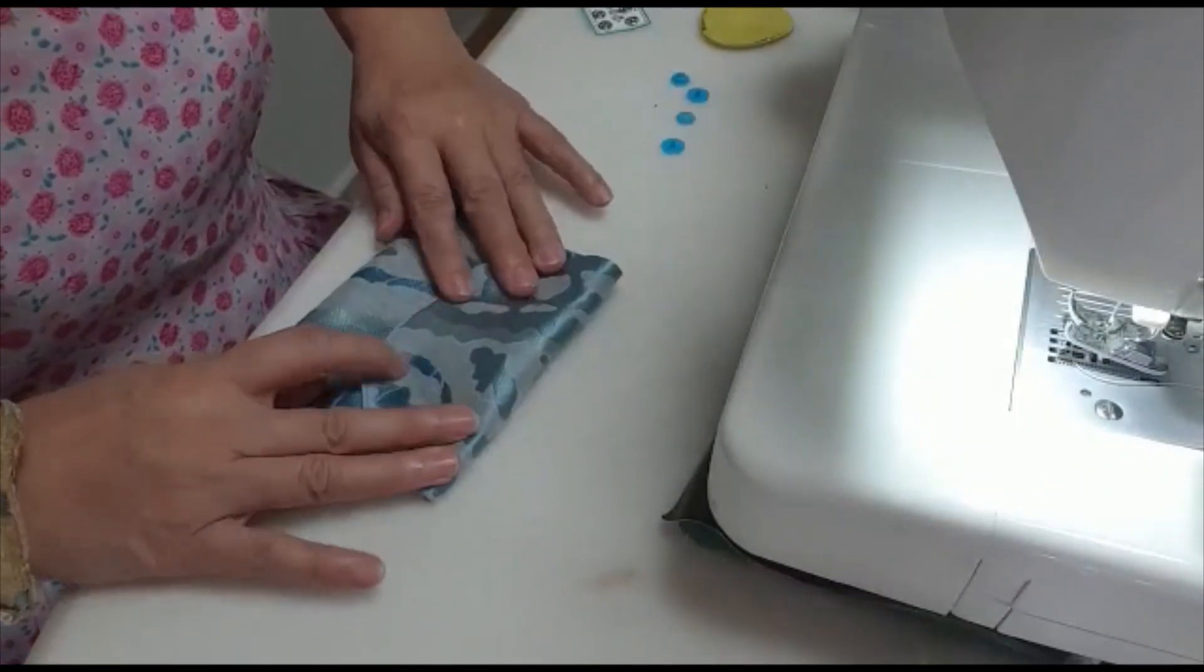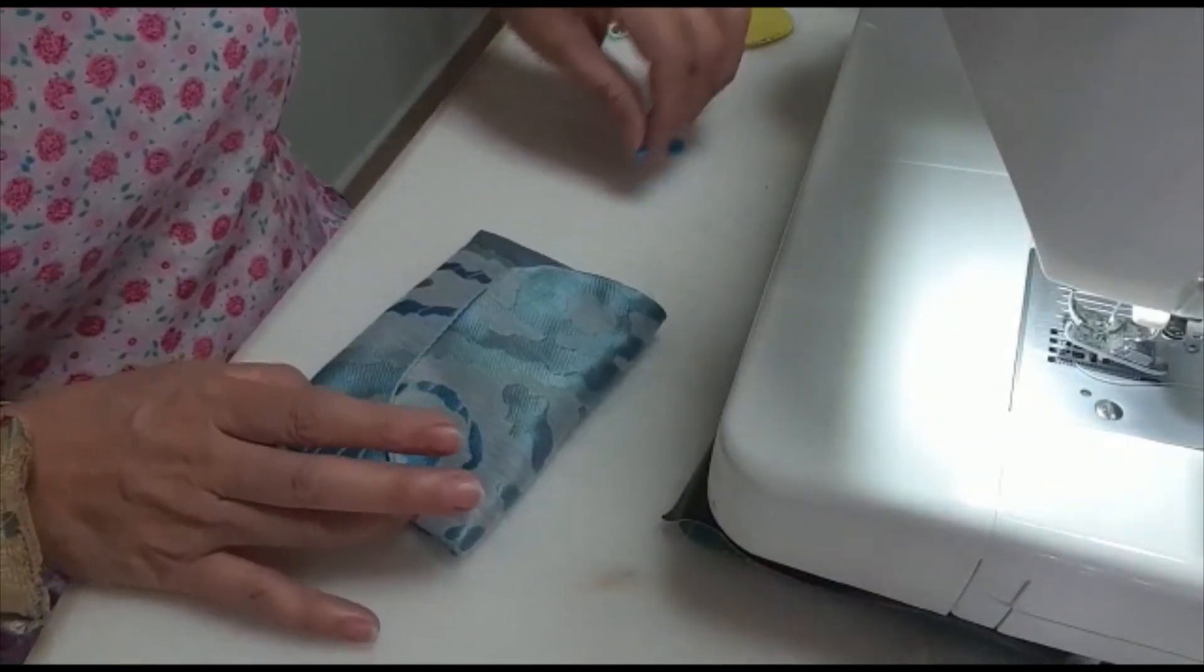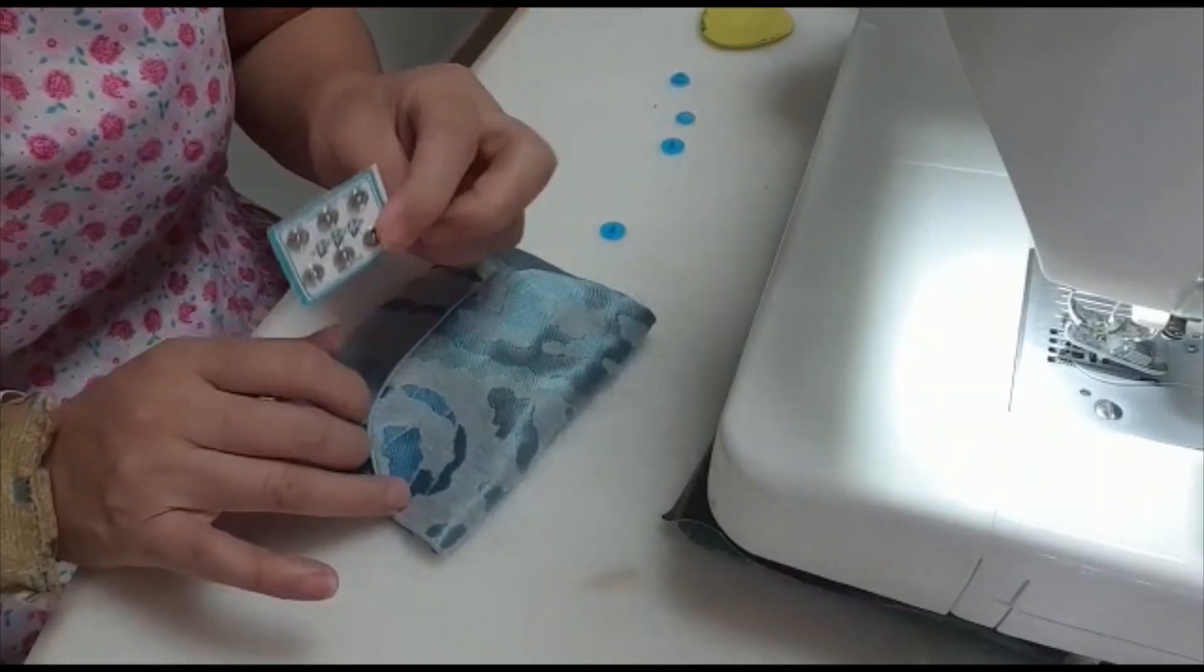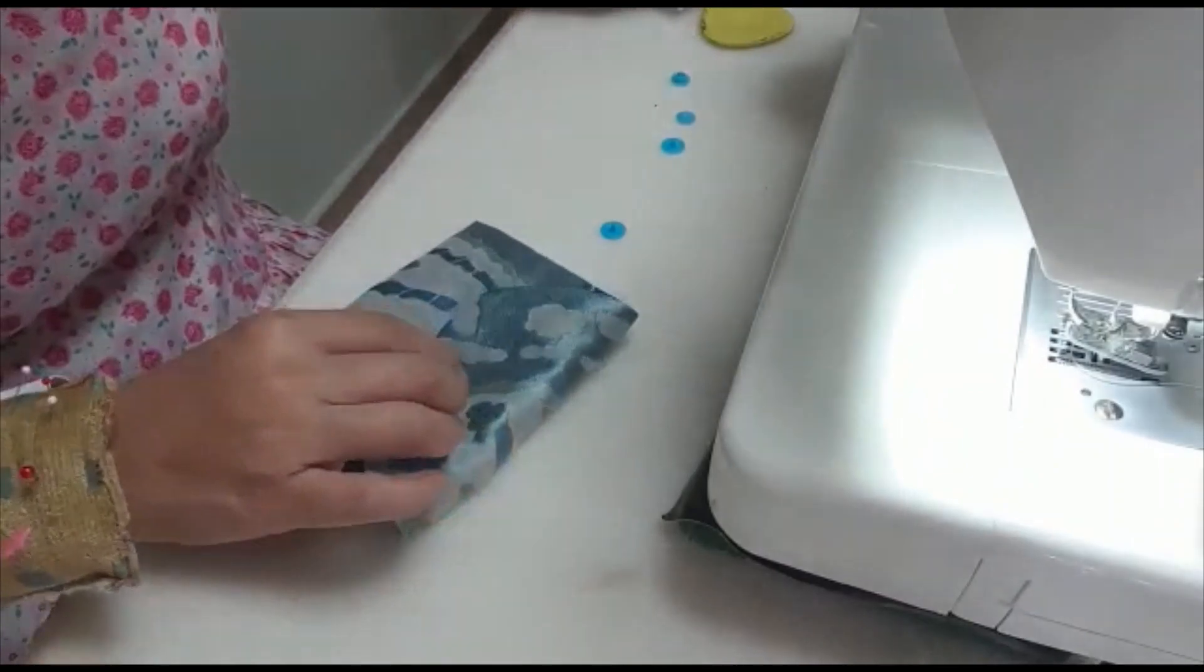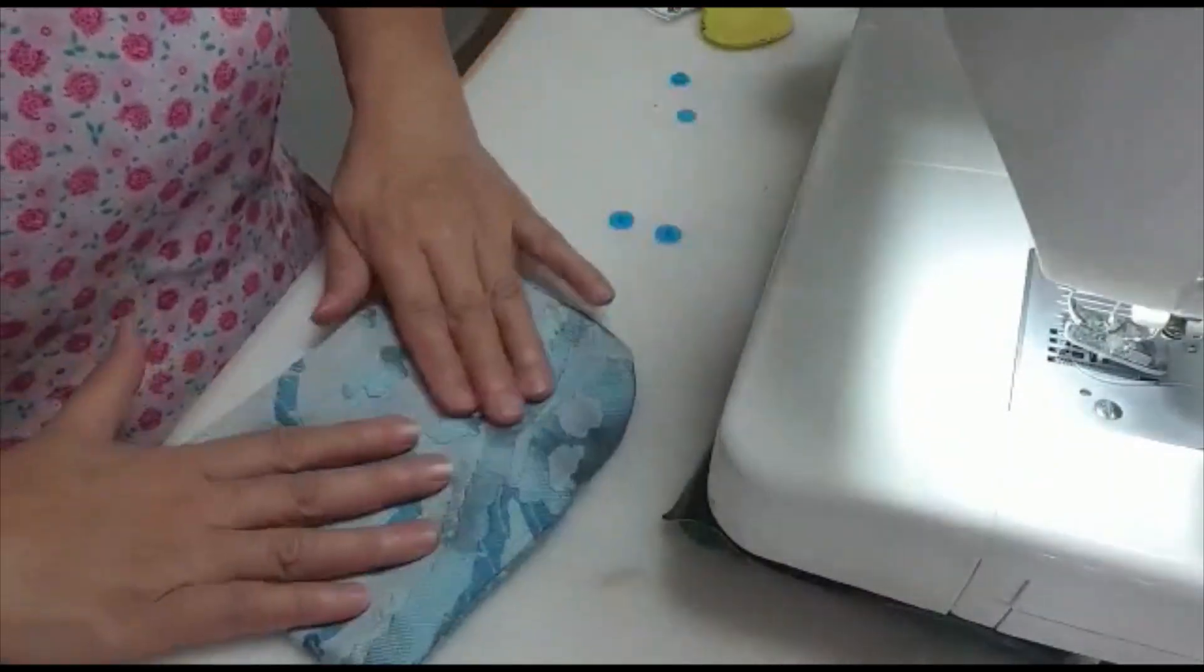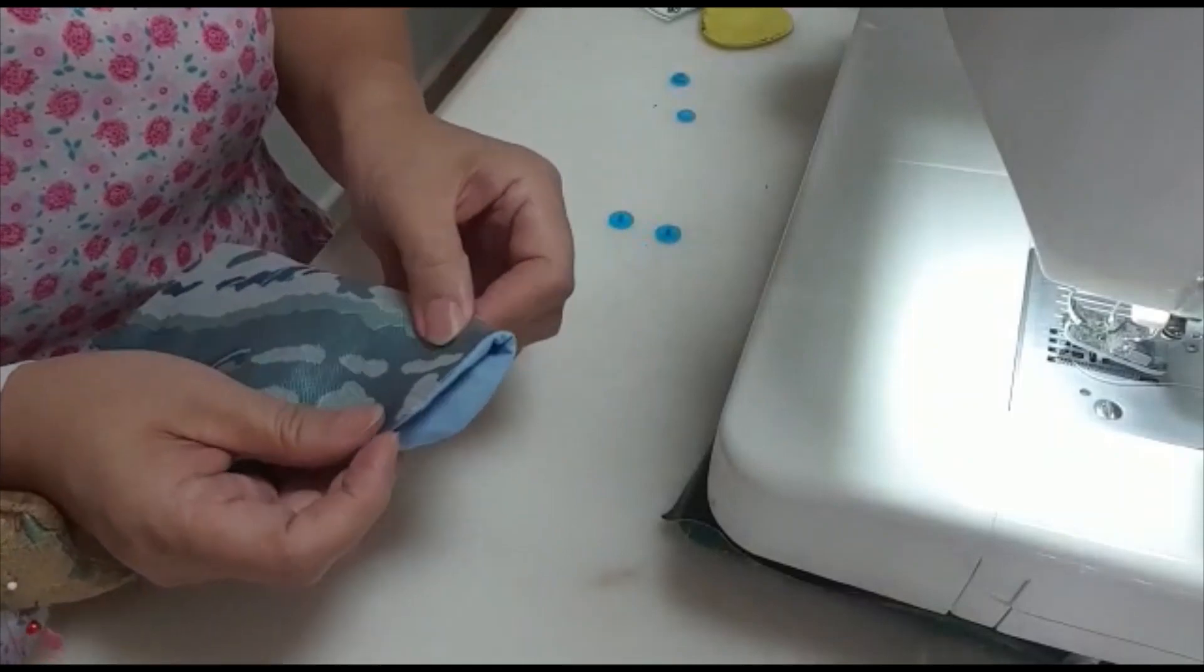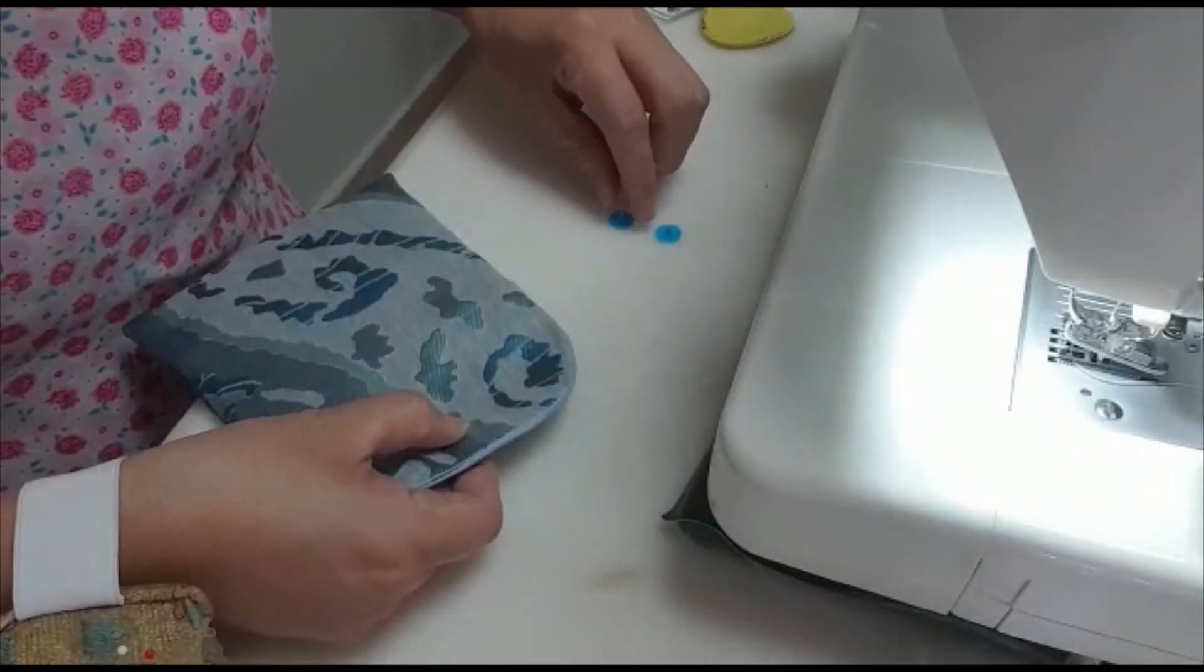The last part I need to do is to put the button. I have this color button so I use this color button. If you don't have it, you can use this press button, one inside and one outside. For me I'll use this. To get the correct measurement, this is the center which you need to put the button.